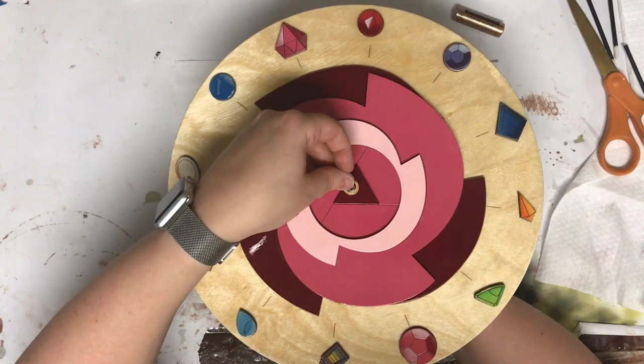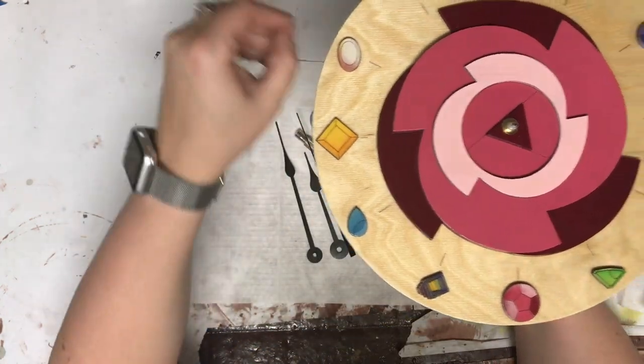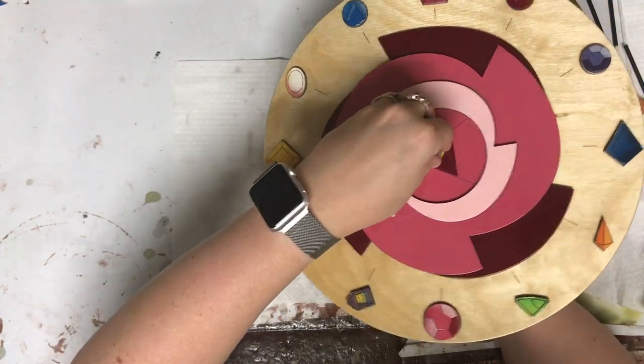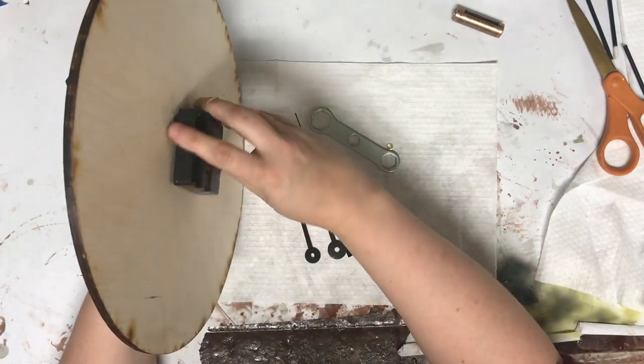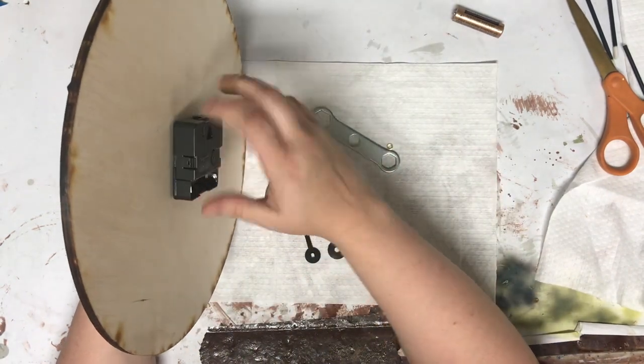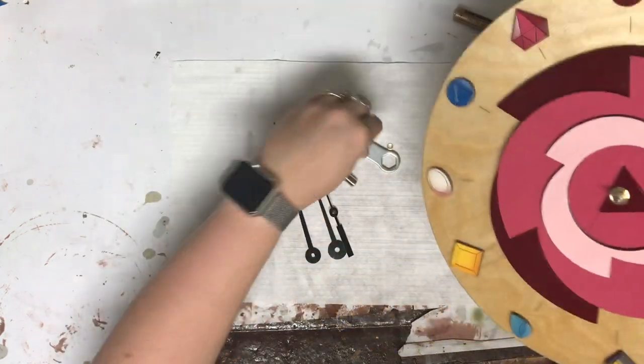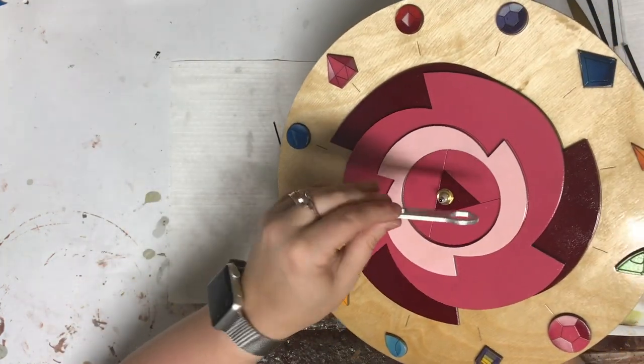So first thing on the front is the metal washer. Then the threaded nut. If you ever make a clock with the setup like this make sure that when you're screwing this nut onto the shaft that you don't over tighten it. If you over tighten it you'll end up getting weird problems and it's likely that it won't keep time very well.